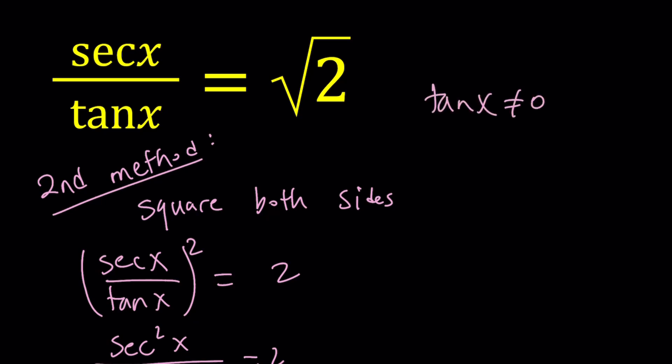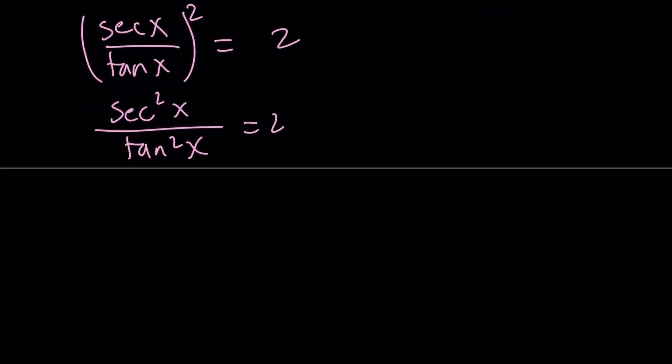And that just means that x is not going to be tangent is 0 when sine is 0. So it's not going to be a multiple of pi. Okay? So those are the exclusions we need to make.